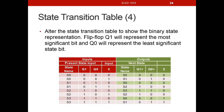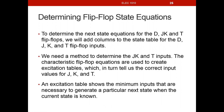After completing the state table, we have to determine what type of flip-flop we want to use to implement our circuit, and determine the state equations based on that. We could use D flip-flops, JK flip-flops, or T flip-flops. We'll work through how to use each type. We'll need to add columns to the state table for the D, JK, and T flip-flop inputs, using a method based on characteristic flip-flop equations and excitation tables, which tell us the correct inputs to generate the next state when the current state is known.